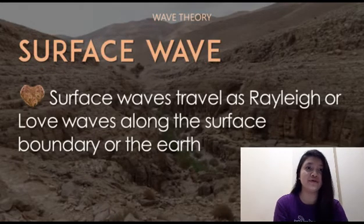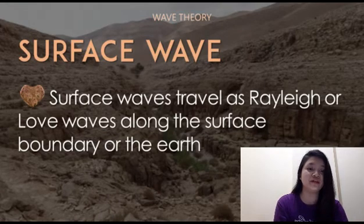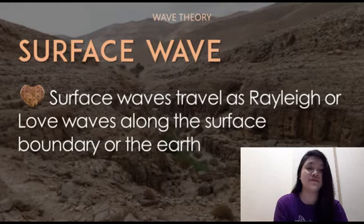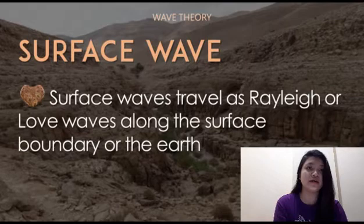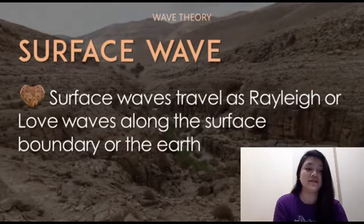The second type of seismic wave is the surface wave. Surface waves travel only through the crust and are of a lower frequency than body waves, making them easy to distinguish on a seismogram, though they arrive after body waves. Surface waves are almost entirely responsible for the damage and destruction associated with earthquakes, and this damage is reduced in deeper earthquakes.